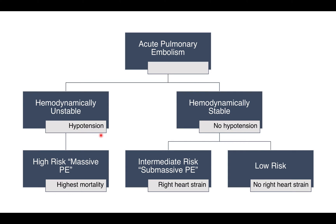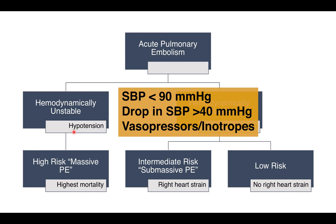It usually takes a large clot to cause systemic hypotension. However, if a patient already has pre-existing cardiopulmonary disease, you can have a small clot and the patient can get hypotensive. The clinical criteria for classifying a patient as hemodynamically unstable in the setting of PE include a systolic blood pressure less than 90 mmHg or a drop of 40 mmHg, or if the patient requires vasopressors or inotropes to support their blood pressure.